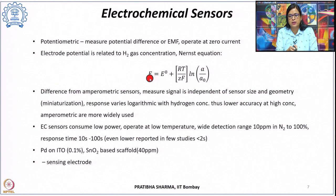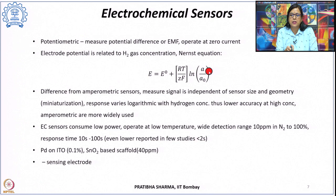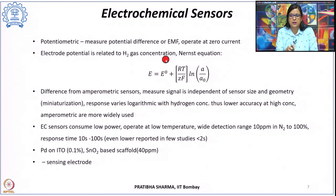In potentiometric electrochemical sensors, the electrode potential is related to hydrogen gas concentration using the Nernst equation: E = E₀ + (RT/ZF) ln(A/A₀), where E is electrode potential, E₀ is standard electrode potential, R is the gas constant, T is temperature, Z is the number of electrons transferred, F is Faraday's constant, A is the activity of the analyte, and A₀ is the activity of the reference.